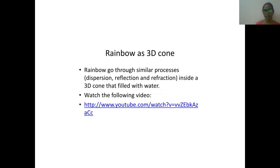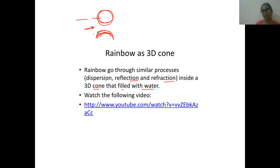Rainbow goes through similar processes — dispersion, reflection, refraction — inside a 3D cone filled with water. On the surface of the earth we can see only a hemisphere of the rainbow. But if we go to high altitudes — like in a flight — we can see it is a complete circle. It is not only half; from high altitude, a complete circular rainbow is observed.